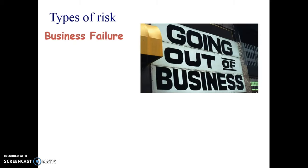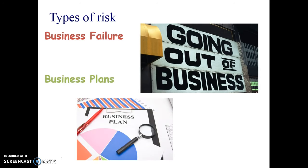So different types of risks. Firstly, business failure — going out of business. A lot of new businesses actually go out of business. One of the best ways of reducing that risk is having a business plan. It helps the entrepreneur really think through how they're going to achieve their goals, identify any gaps in their plan, and helps them to secure external finance, making it more likely they'll be able to buy the resources they need.